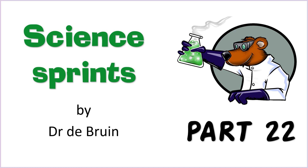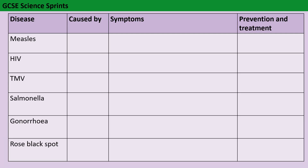Welcome back for part 22 in this narrated series of videos, which sit alongside my GCSE science sprints on TikTok and YouTube shorts. In this video, we're looking at the causes, symptoms, prevention and treatment of six of the different diseases that are named within your GCSE biology or GCSE combined science specification.